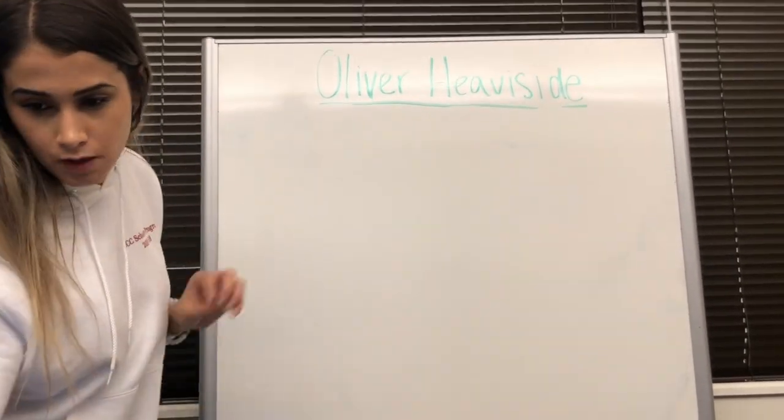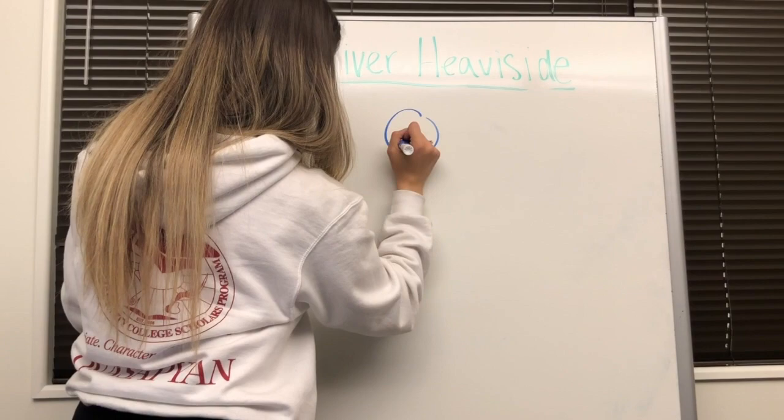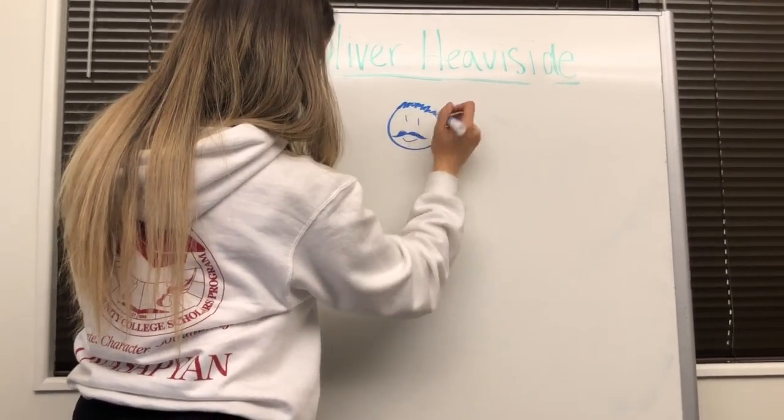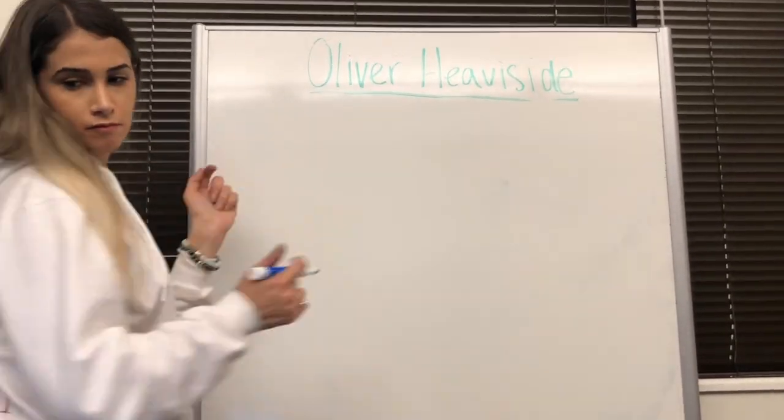Between 1880 and 1887, he developed his operational form of calculus. In 1891, he was elected a Fellow of the Royal Society, FRS, due to his extensive research on electromagnetic waves.